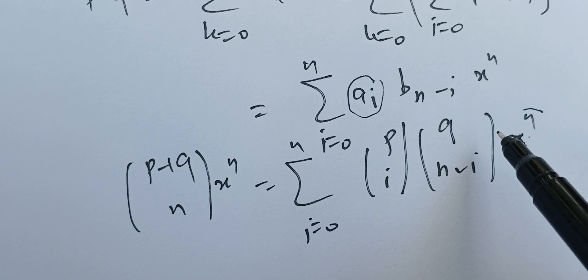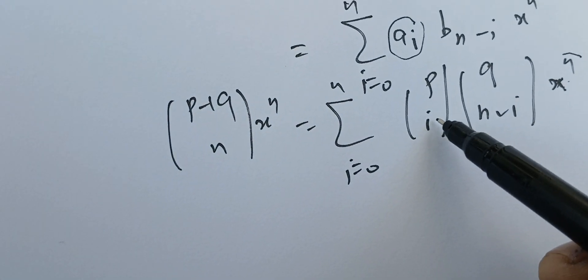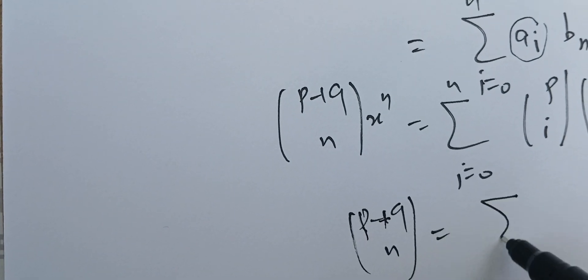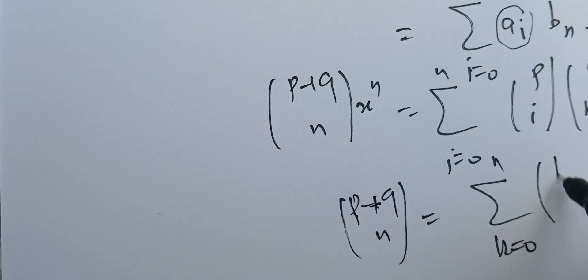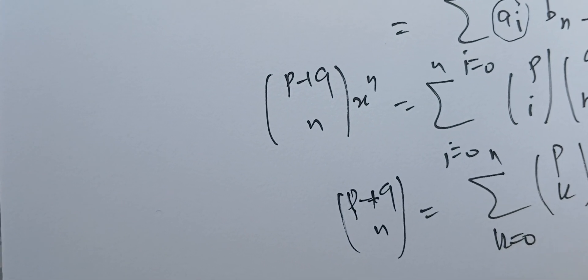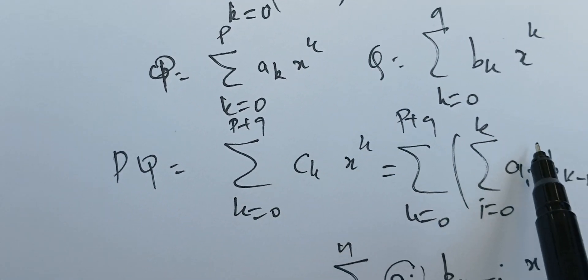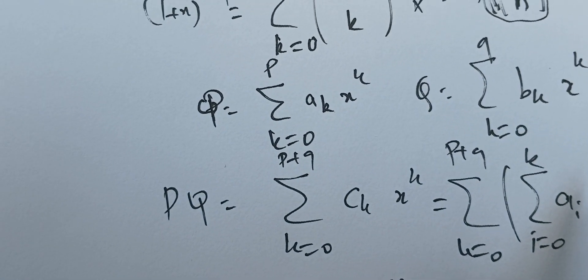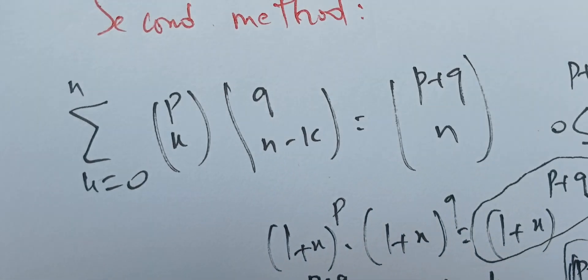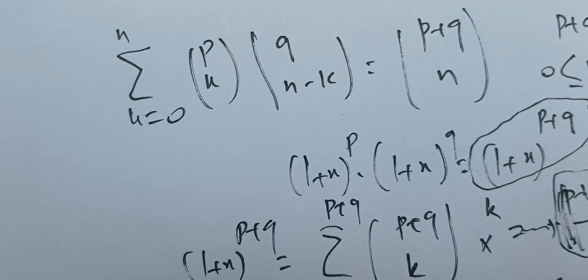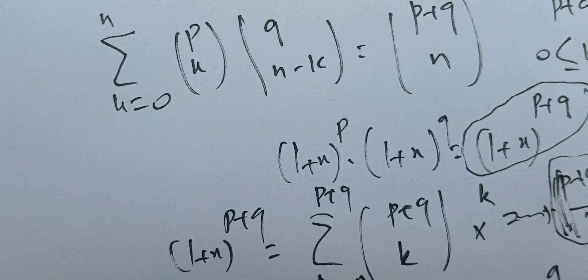Using polynomial identification — since polynomials are unique, their coefficients are unique — the coefficient facing x^n must be the same on both sides. We have therefore proved that (p+q choose n) equals the sum for k from 0 to n of (p choose k)(q choose n−k). This is the polynomial identification that leads us to this result. The key idea is knowing how to do binomial multiplication. Please like, share, and subscribe — thank you very much, and I wish you a great Sunday!